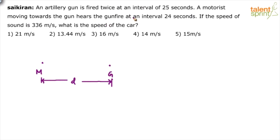A motorist moving towards the gun hears the gunfire at an interval of 24 seconds. So if the motorist is not moving in Case 1, he will hear the first gunshot and after 25 seconds he will hear the second shot. That means the sound would take 25 seconds to cover this distance D.